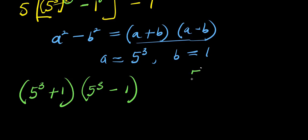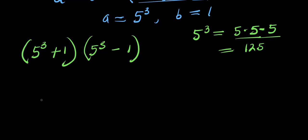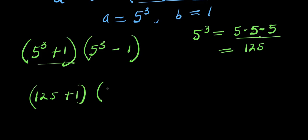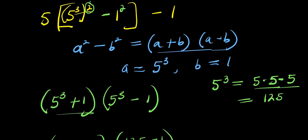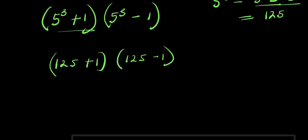Now, what is the value of 5 to the power of 3? This equals 5 times 5 times 5; 5 times 5 is 25, and 25 times 5 is 125. So we are going to have 125 plus 1 times 125 minus 1. And don't forget the fact that we still have our 5 out front and there is a minus 1. So we have 5 multiplying everything, and minus 1.